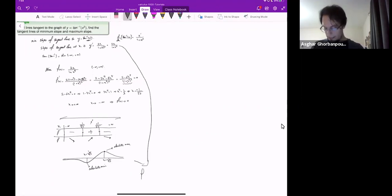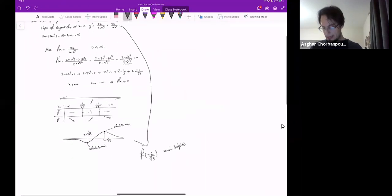So f at negative 1 over the fourth root of 3 is the min slope, and f at plus 1 over the fourth root of 3 is the max slope of the function.